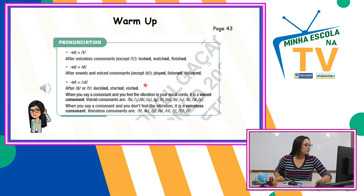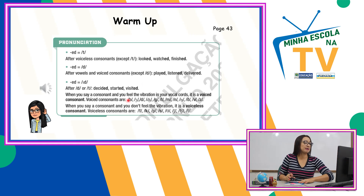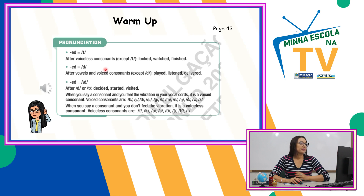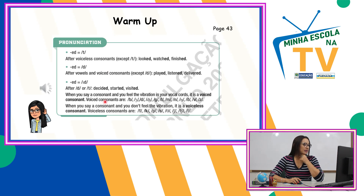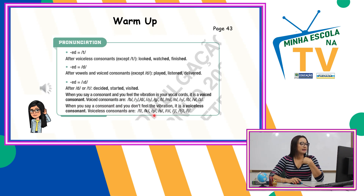Então, aqui no nosso Word Map, a gente vai trabalhar um pouquinho de pronúncia. Observem o material que tem no livro de vocês. After voiceless consonants — quando você tem um verbo que termina em consoante voiceless. O que é voiceless? É quando uma consoante não tem vibração nas cordas vocais. Por exemplo, verbos terminados em F, K, P, S e outros sons, eles não têm essa vibração. Quando eu falo F — não vibra nossas cordas. Então eu chamo de som voiceless.